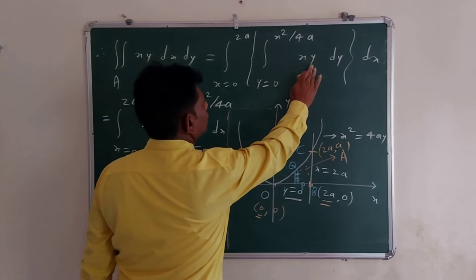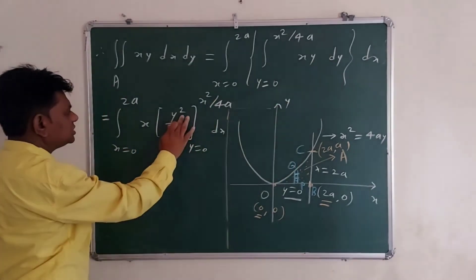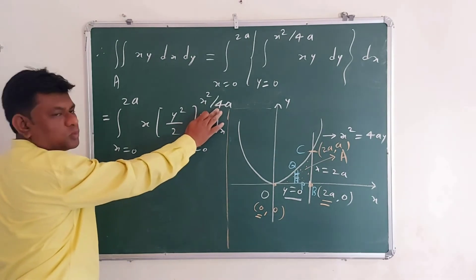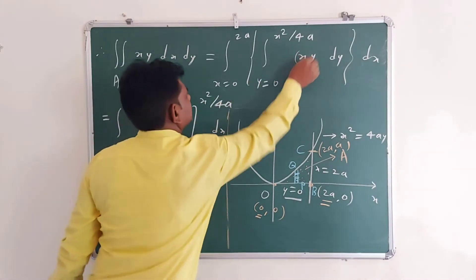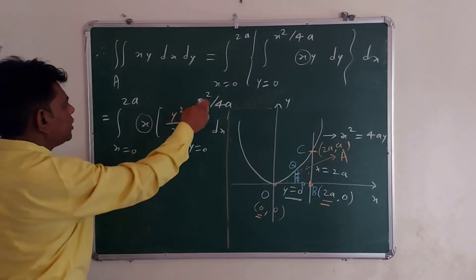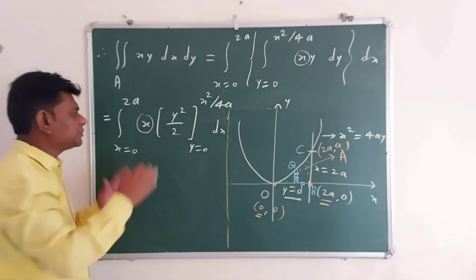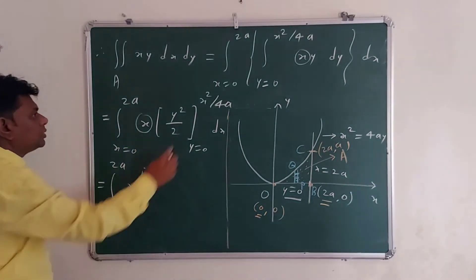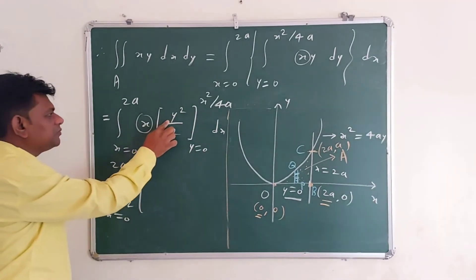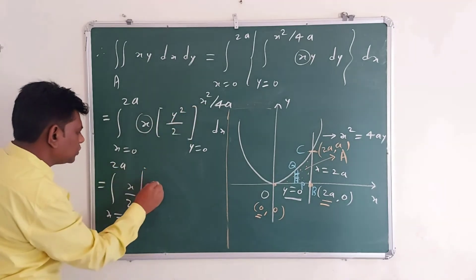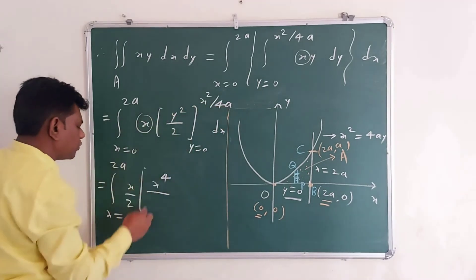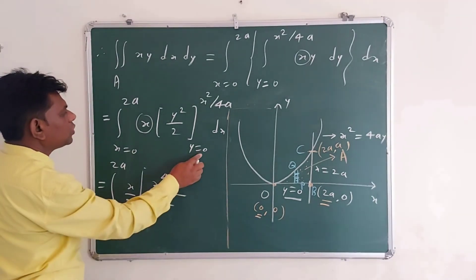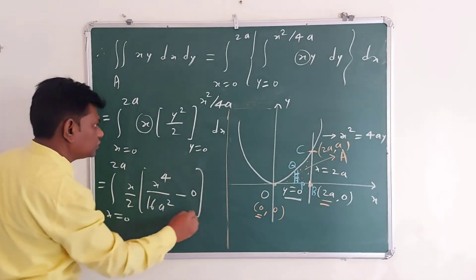Therefore, the integration of Y dY gives Y² / 2, evaluated with limits Y = 0 to X² / (4A), and X remains as is. By substituting the upper limit minus the lower limit, we get: (1/2) · [X² / (4A)]² = X⁴ / (16A²) / 2, minus the lower limit 0, times dX.